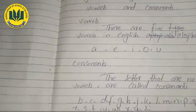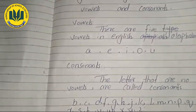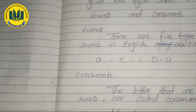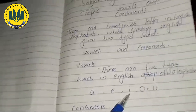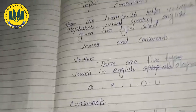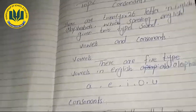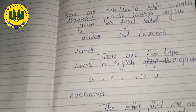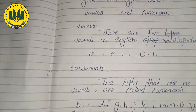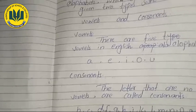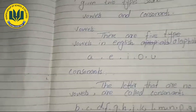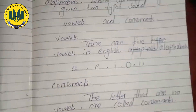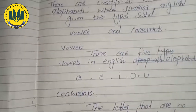First of all, we learned: how many alphabets are there? Twenty-six. And two sounds — which are they? Vowels and consonants. How many vowels are there? Five. Which are the vowel sounds? A, E, I, O, U.